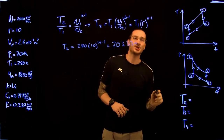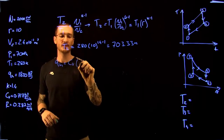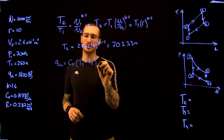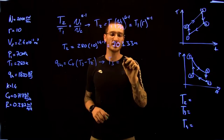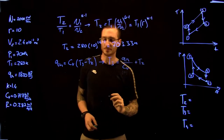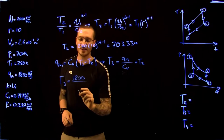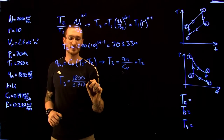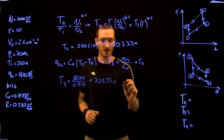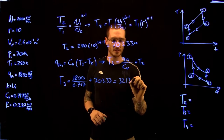From state 2 to 3, we have heat addition. Q_in = CV(T3 − T2), so T3 = Q_in/CV + T2 = 1,800/0.717 + 703.33 = 3,213.79 K.